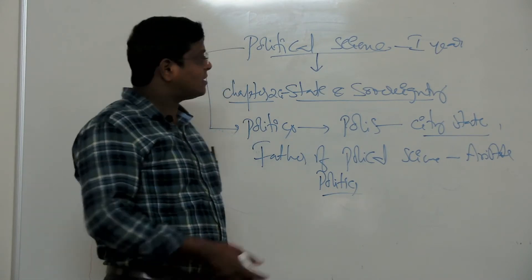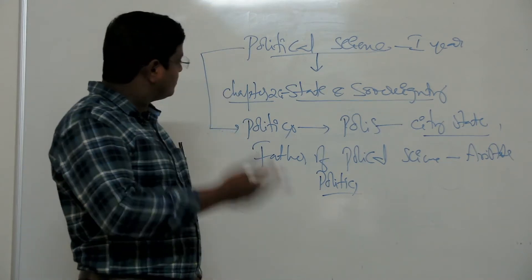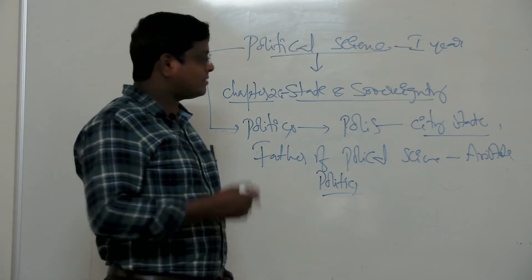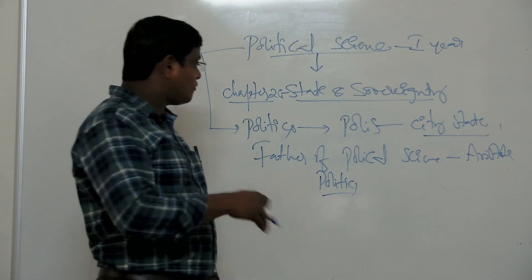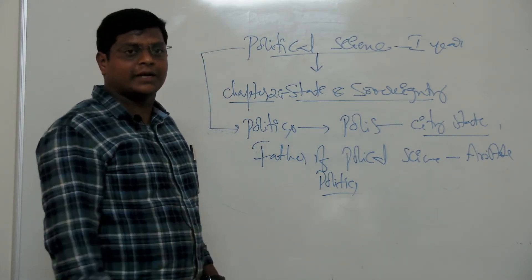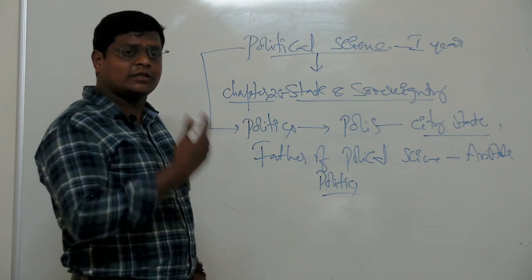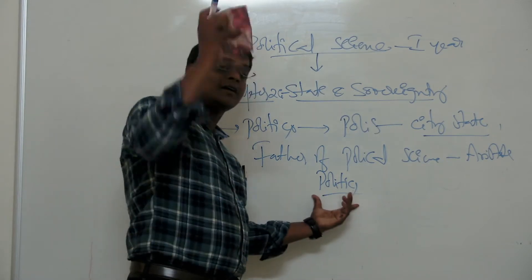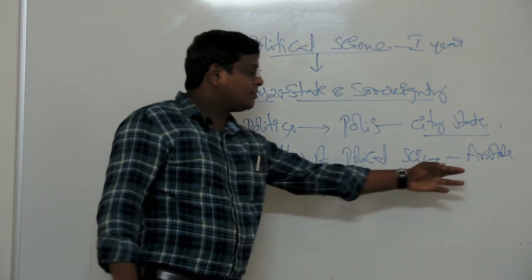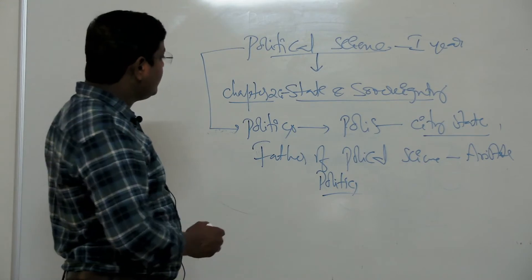In this text, Aristotle clearly mentioned the subject matter of political science — how people form government, how government has three organs: legislature, executive, and judiciary, what powers are enjoyed by each organ, how powers are separated, what is the constitution, justice, equality, and liberty. He described all this in the 5th and 4th century BC, which is why he received credit as the father of political science.